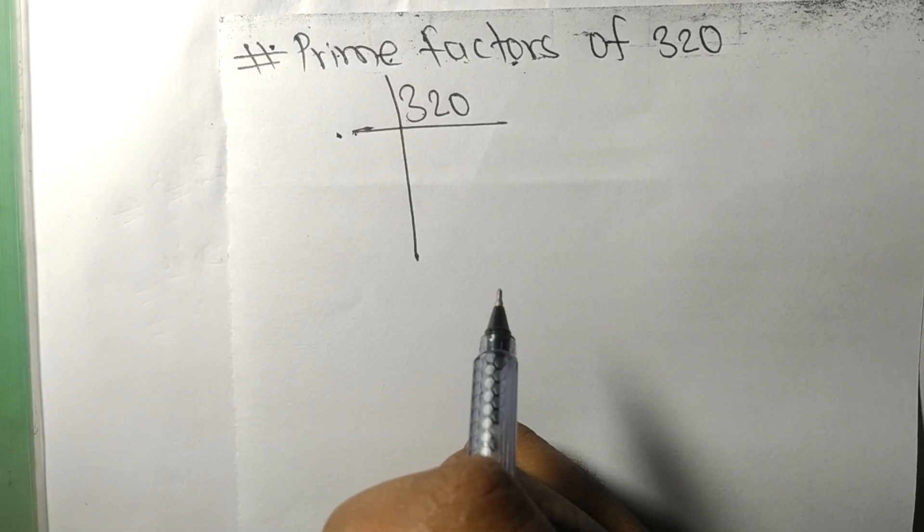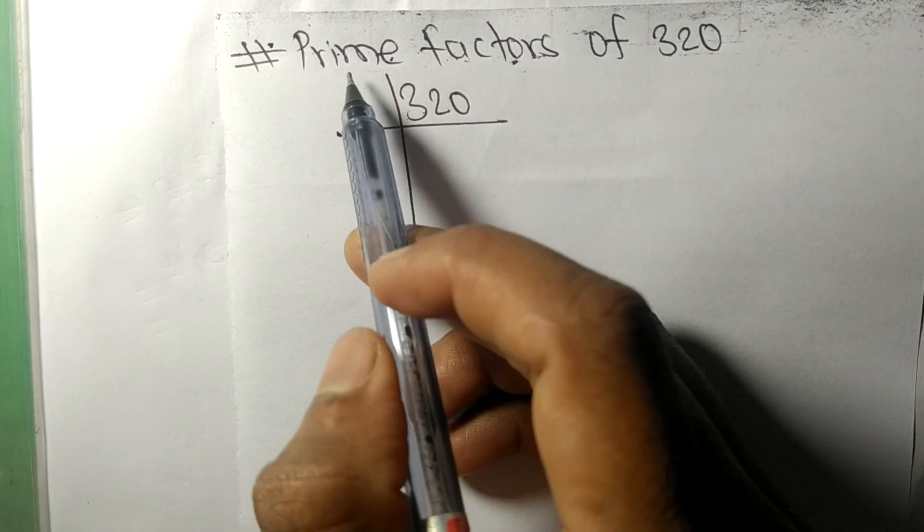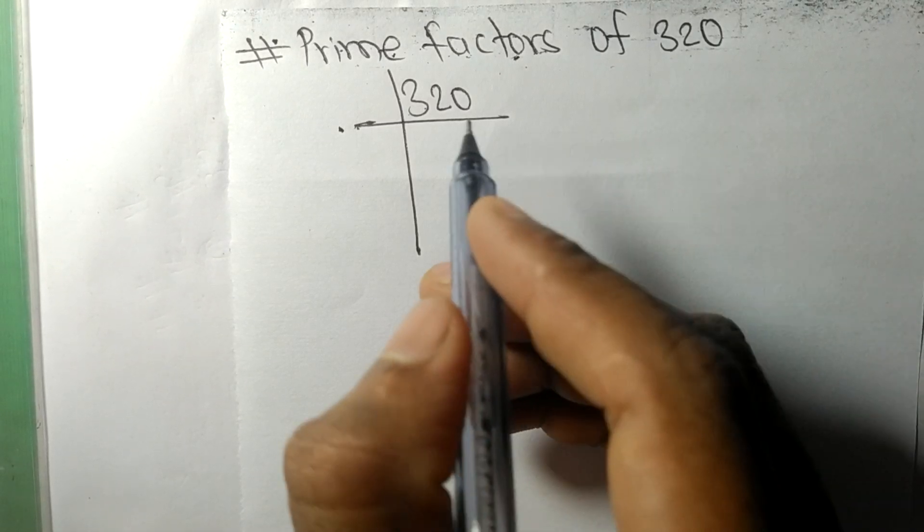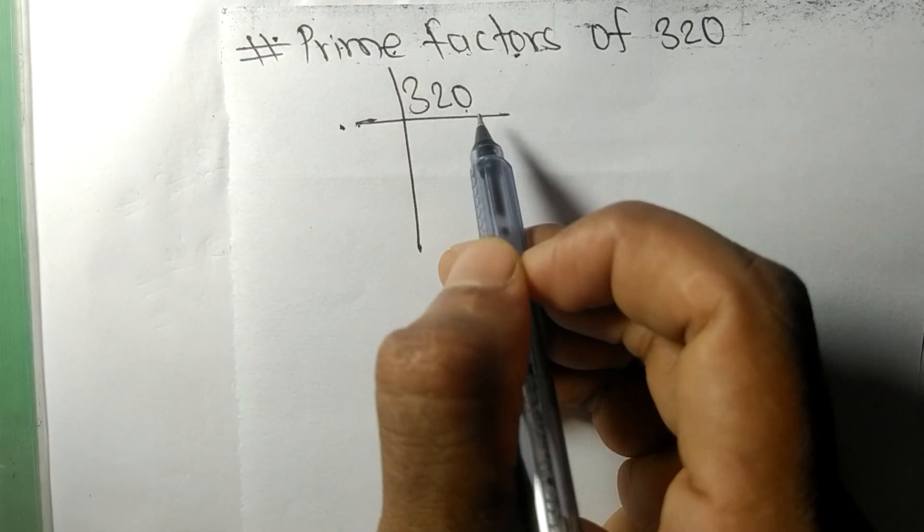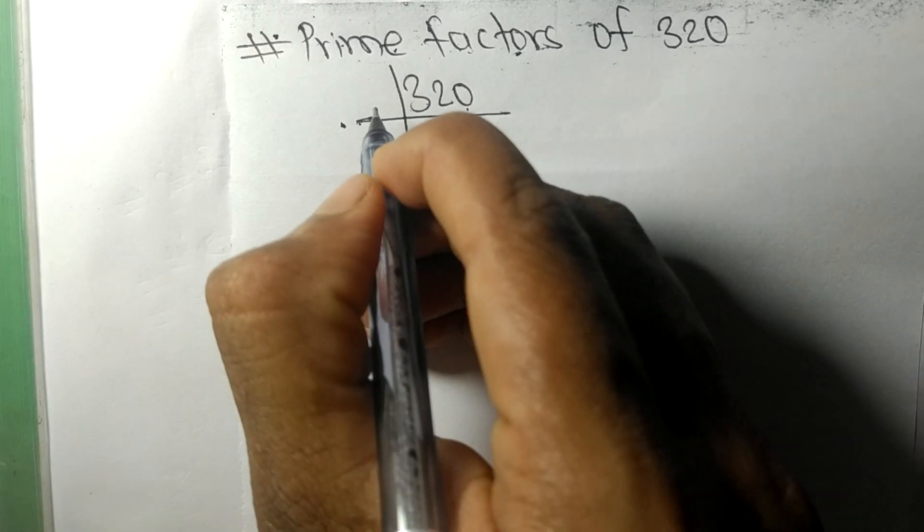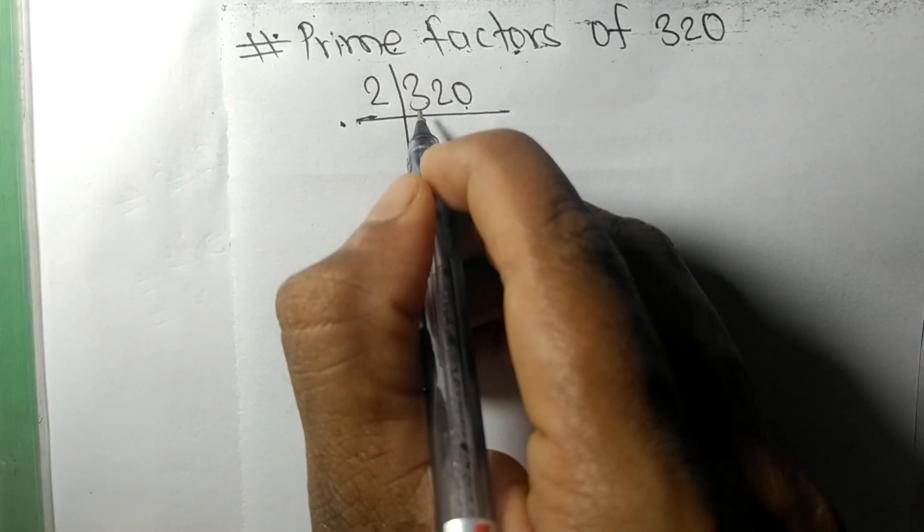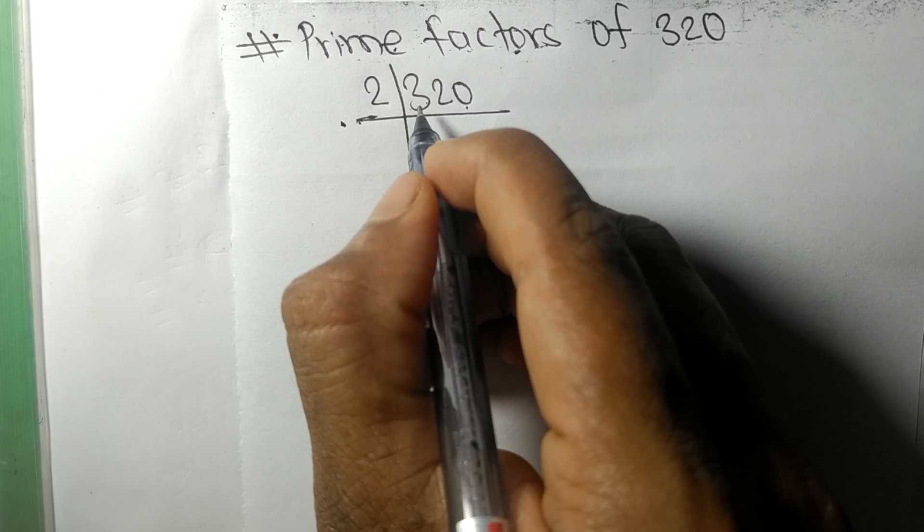So today in this video we shall learn to find the prime factors of 320. So at last it contains 0, so this whole number is divisible by 2. 2 times 1 is 2, remainder 1, so 1 to 12.